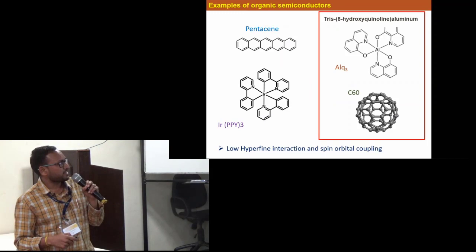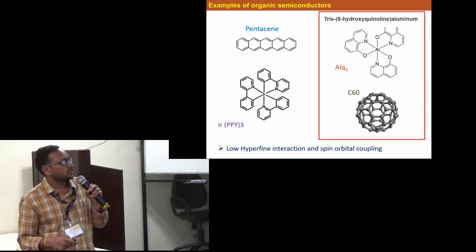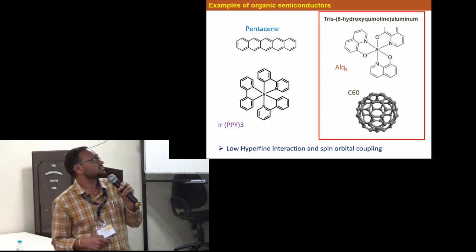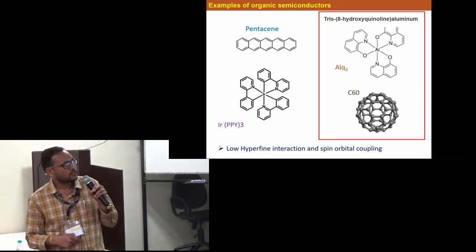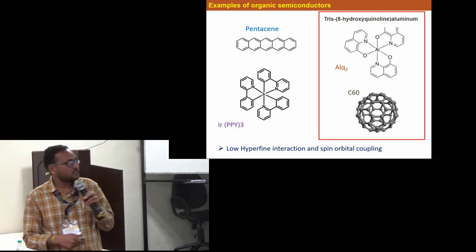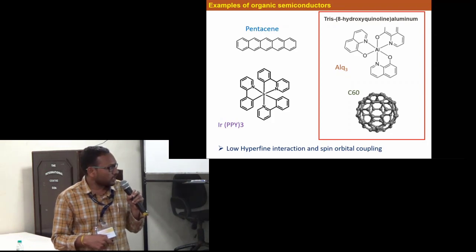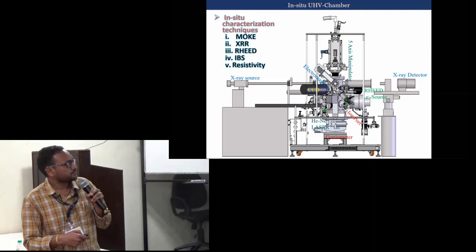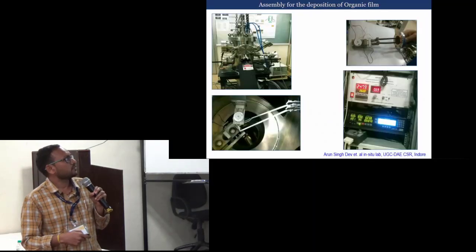Some examples of organic semiconductors are presented here. Out of which this is the most used in this category, Alq, commonly known as Alq3. It is an organic semiconductor which has low hyperfine interaction and low spin-orbit coupling.